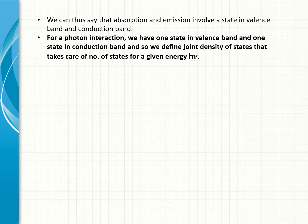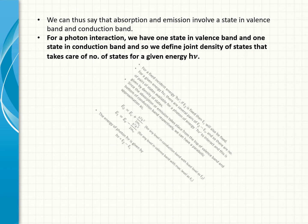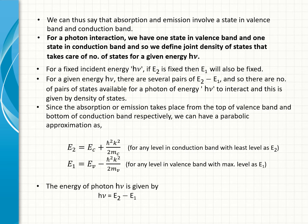We can thus say that absorption and emission involve a state in valence band and conduction band. For a photon interaction, we have one state in valence band and one state in conduction band, and so we define joint density of states that takes care of number of states for a given energy hν. For a fixed incident energy hν, if E2 is fixed then E1 will also be fixed. For a given energy hν, there are several pairs of E2-E1, and so there are number of pairs of states available for a photon of energy hν to interact, and this is given by density of states.